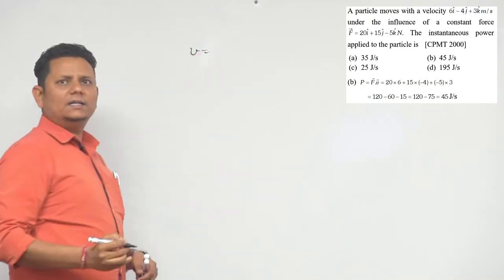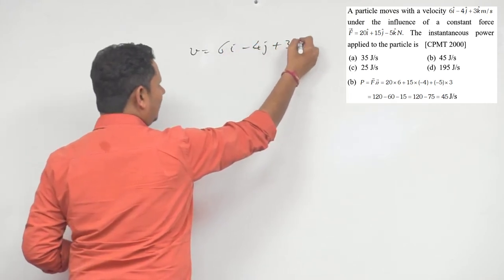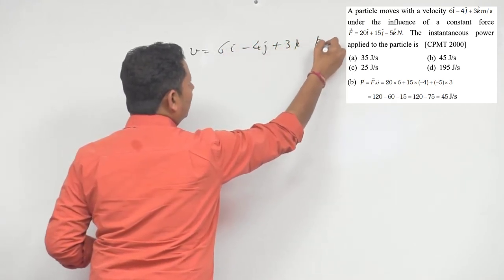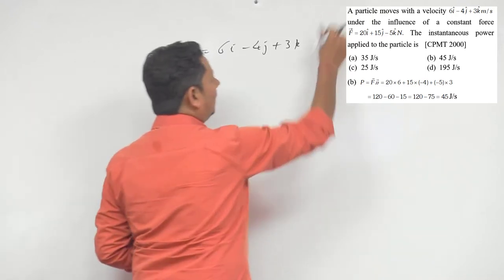Velocity is given as 6i cap minus 4j cap plus 3k cap. This is in meters per second. This is the velocity given to us.